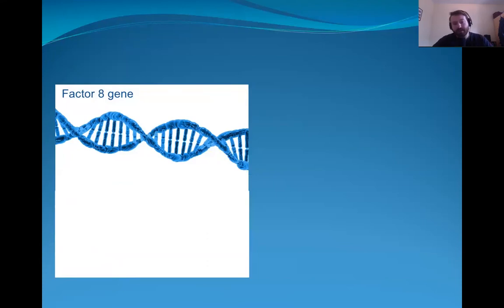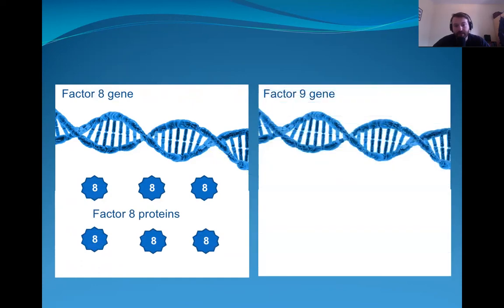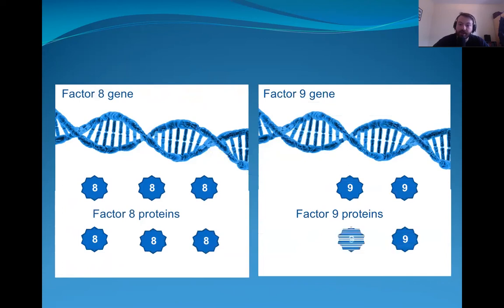To understand hemophilia, it's important to understand how coagulation factors work. Factor 8 is a gene in the DNA, and this gene is responsible for the production of the factor 8 proteins that participate in the coagulation process. The same thing happens with factor 9 — the factor 9 gene is responsible for the production of the factor 9 proteins.